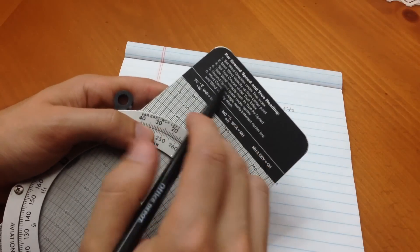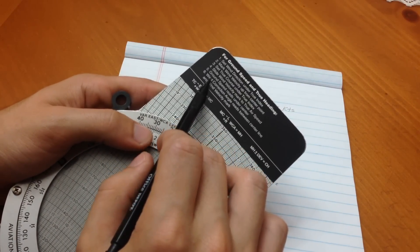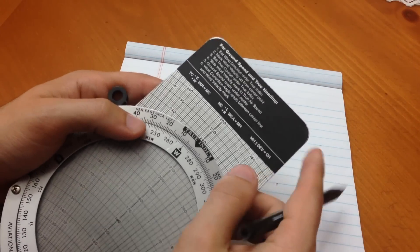On the back, to find our ground speed and true index, we have a set of instructions here that make it real simple. And you really don't have to memorize it.